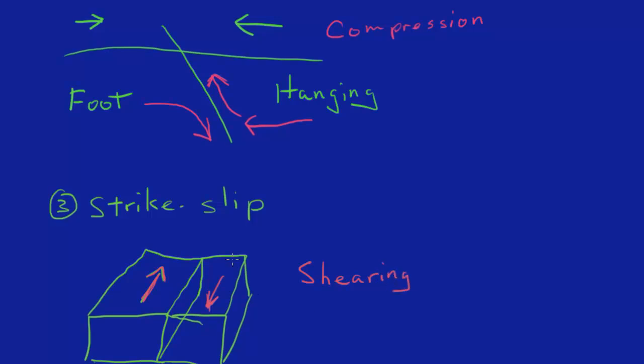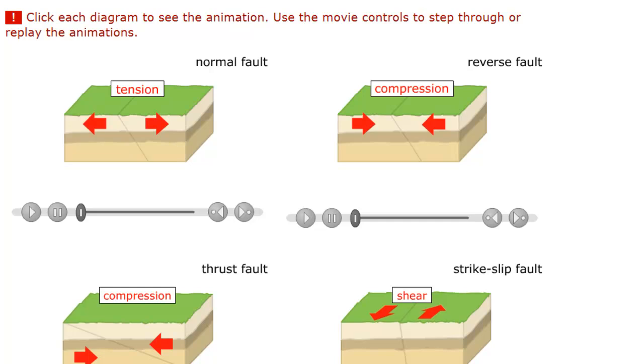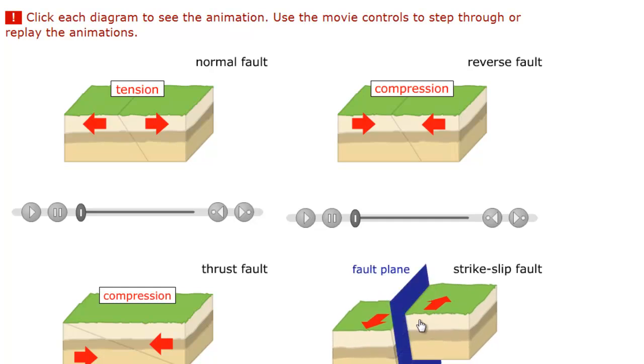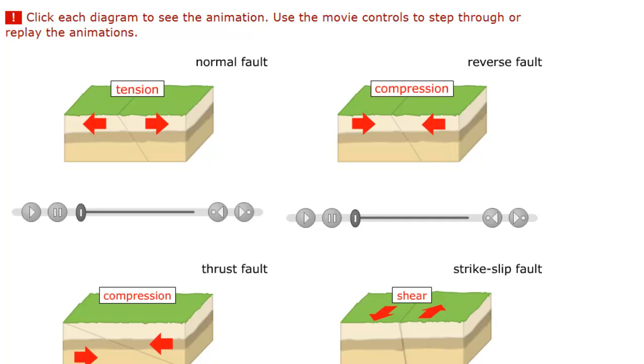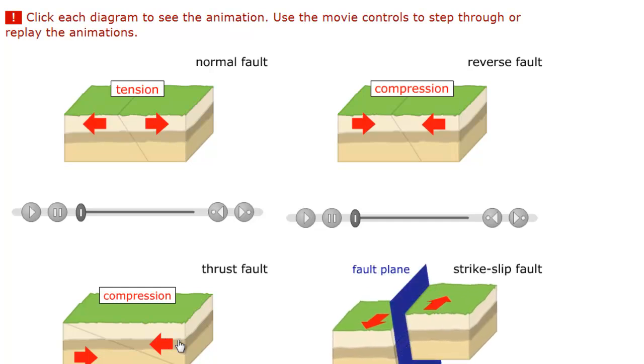And you can imagine what that animation's gonna look like. Let's go back, and over here we have the shearing motion of a strike-slip. So it's not getting pushed or pulled away from the fault plane, it's going parallel to it. And if you notice, there's something also called a thrust fault. It's very much like the reverse fault here.